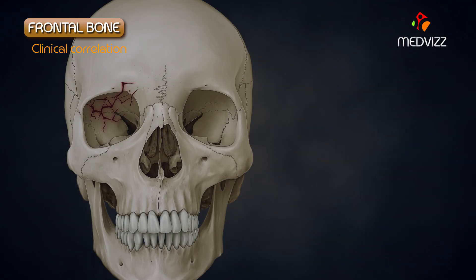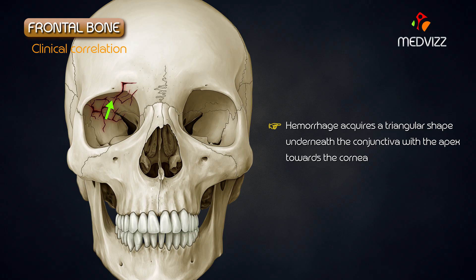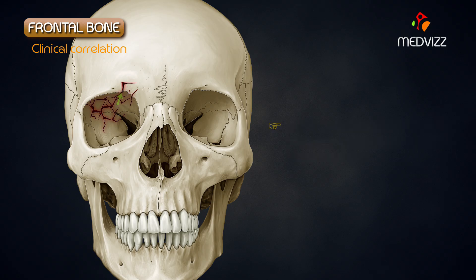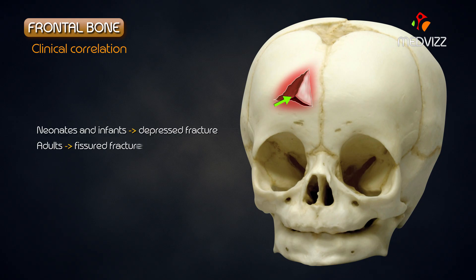A fracture of the orbital plate of the frontal bone leads to hemorrhage into the orbit. The hemorrhage acquires a triangular shape underneath the conjunctiva, with the apex towards the cornea and the base towards the orbital margin. The frontal squama is prone to fracture. In neonates and infants, it is a depressed fracture, whereas in adults it is a fissured fracture, where the depressed area always shows as an irregular line of fracture at its periphery.